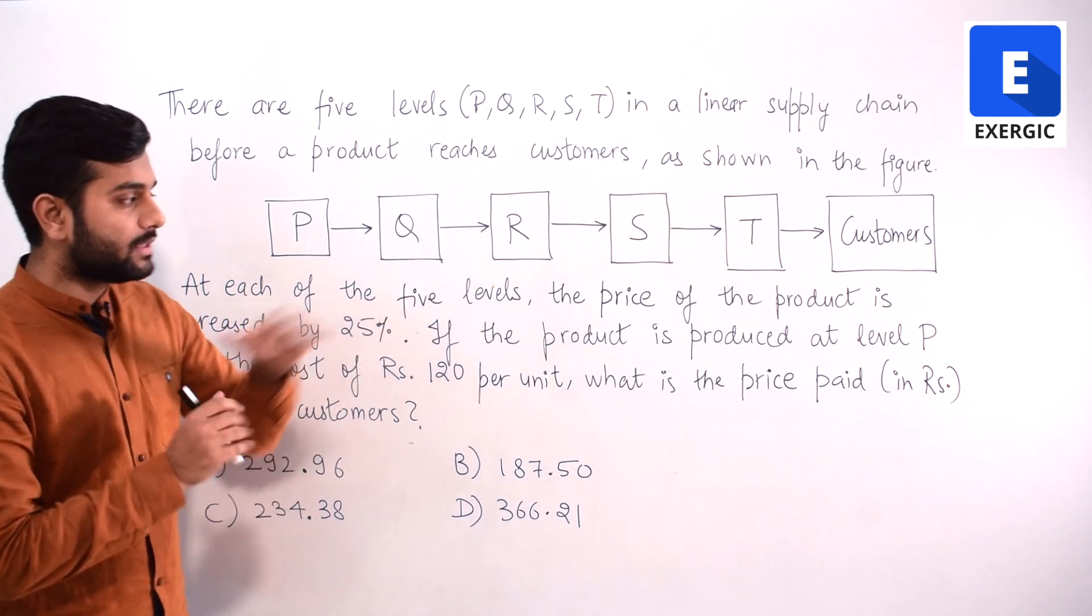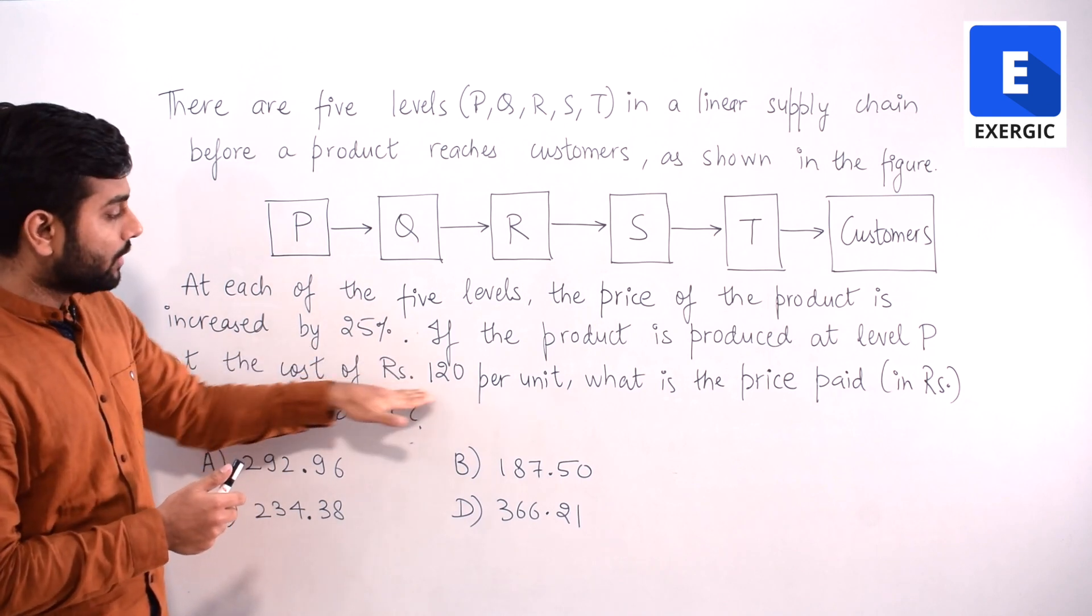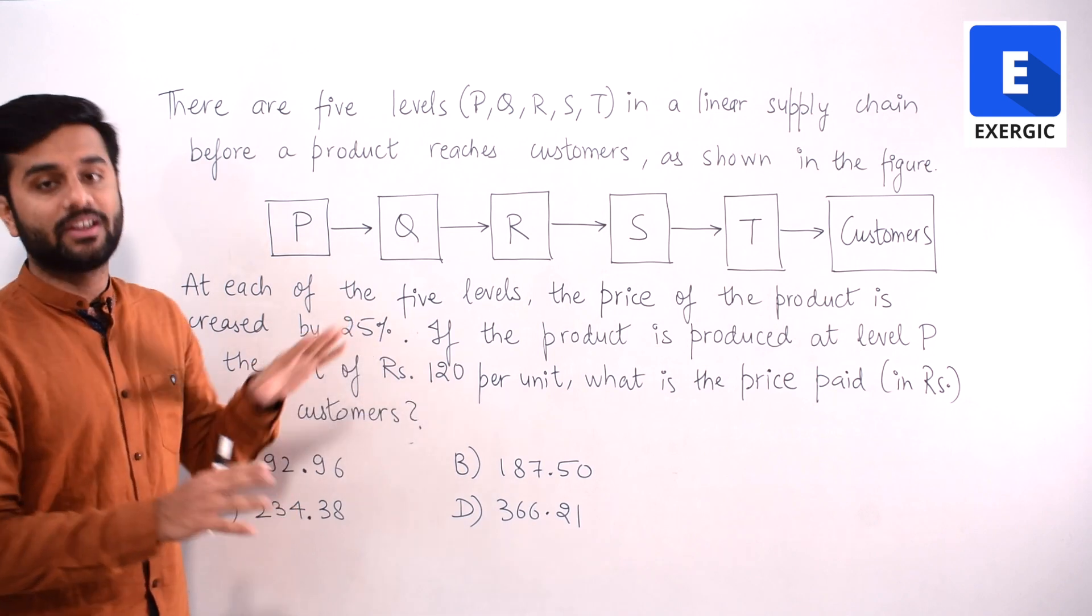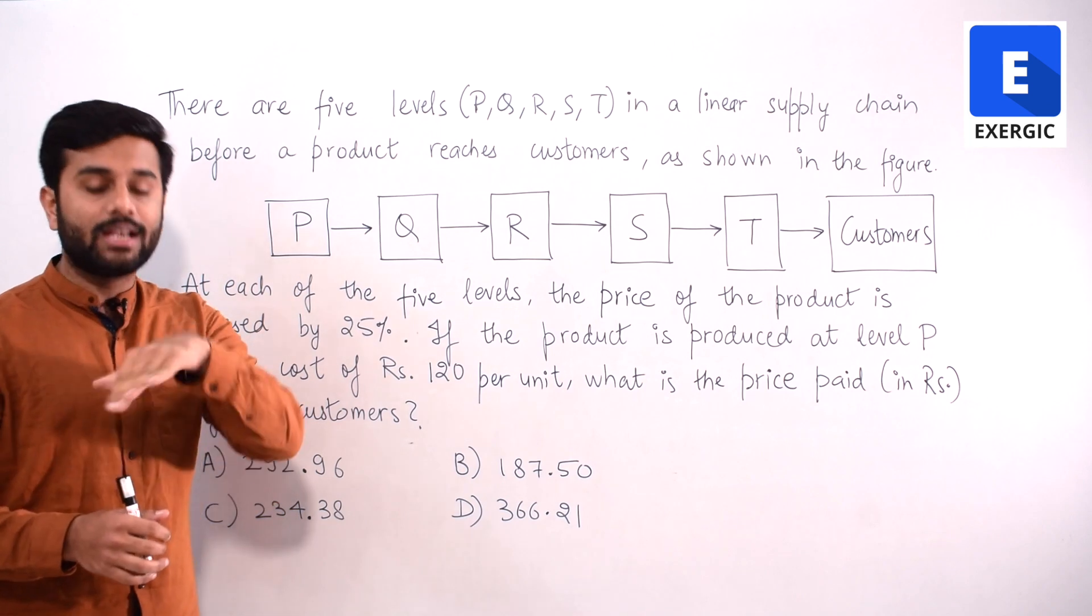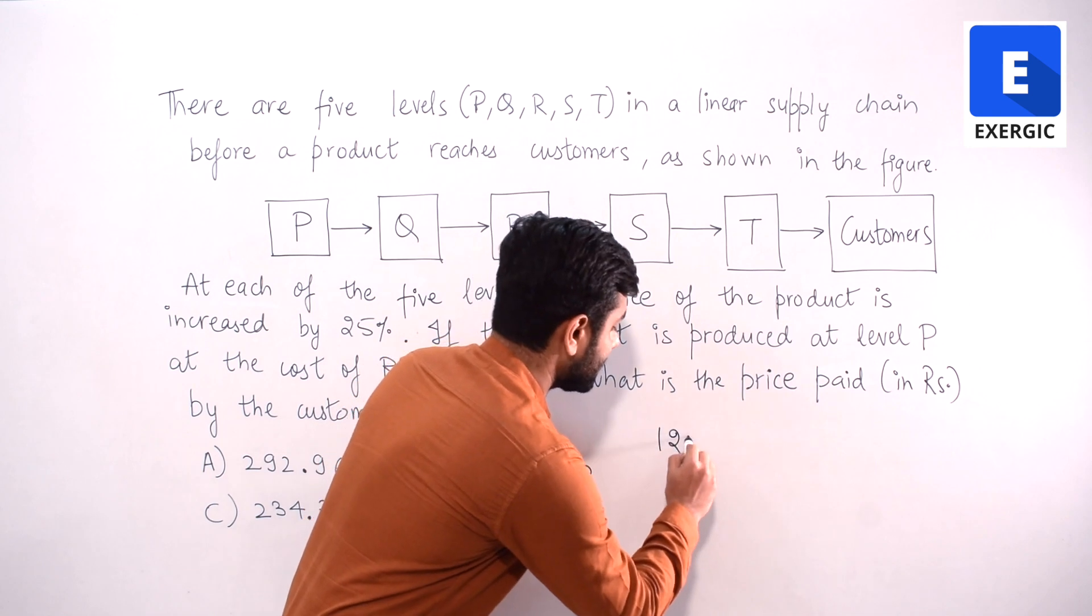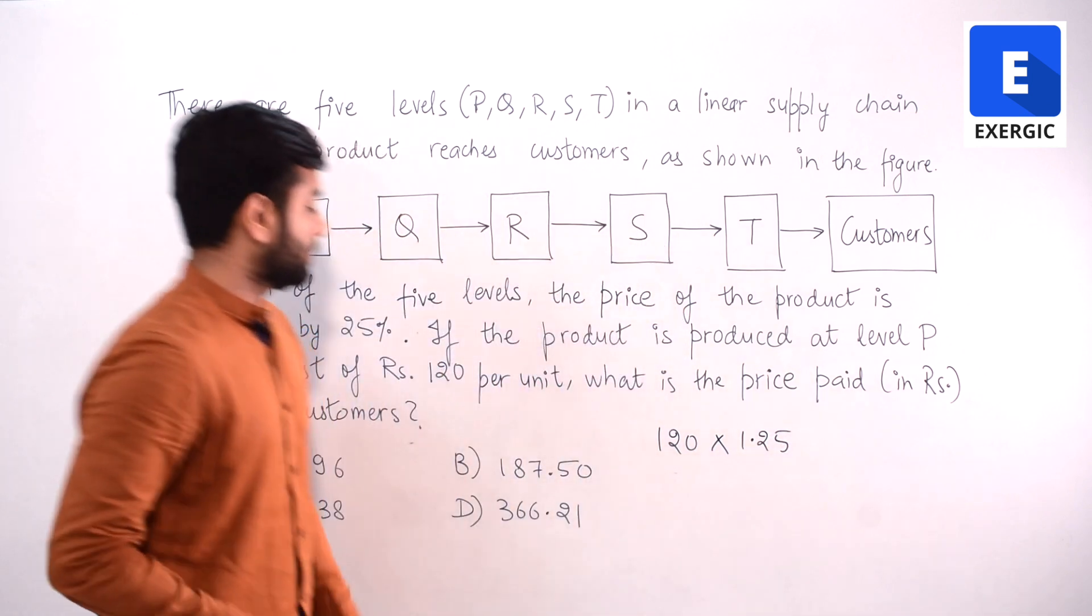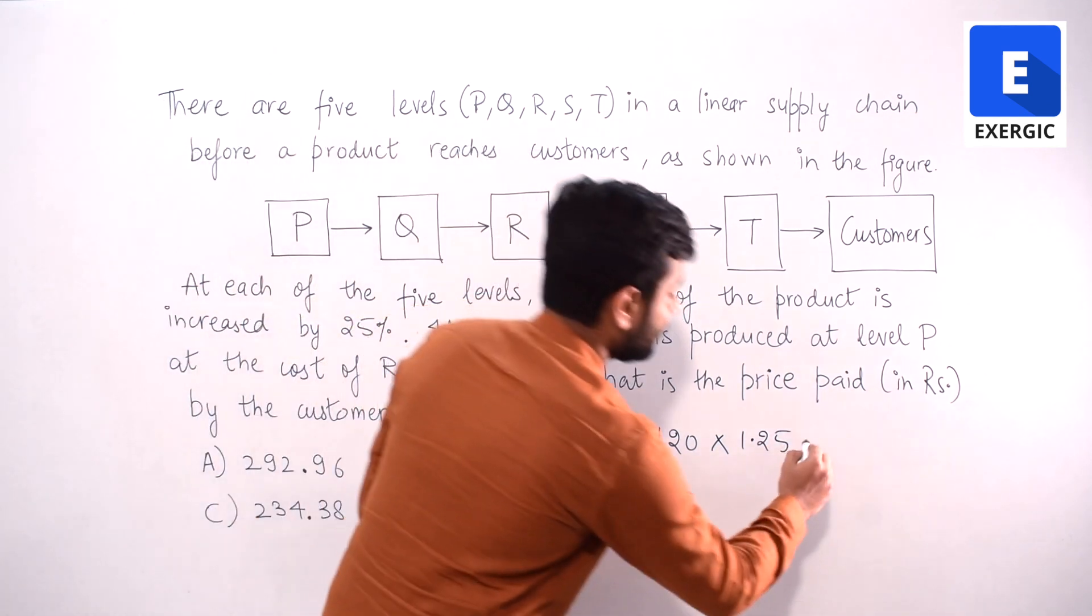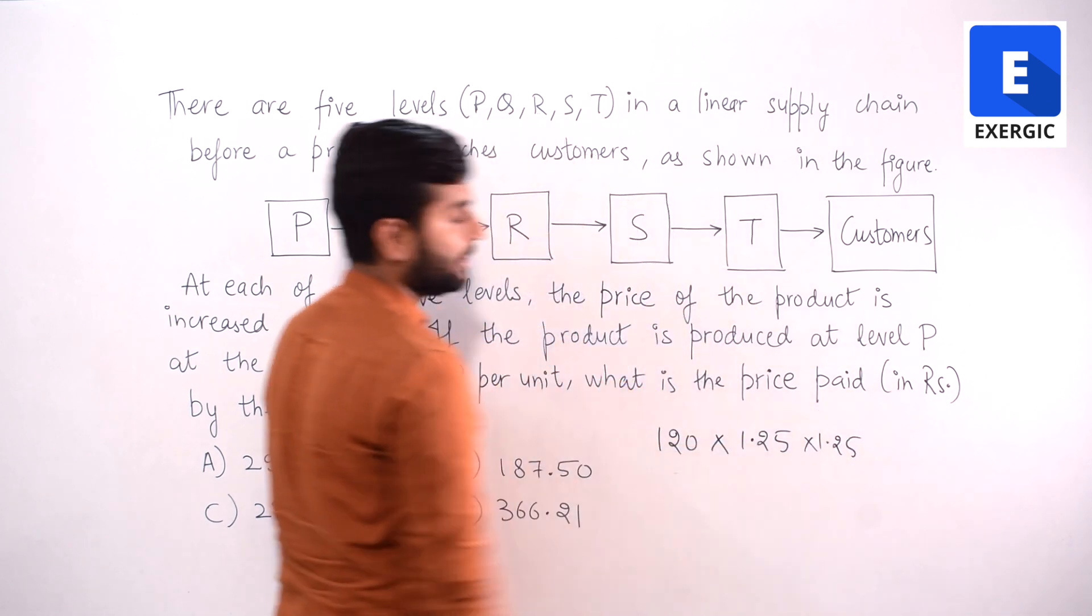This product reaching the customer initially has a cost of Rs. 120. Only two numbers are given to us: 120 and 25%. 120 is the initial cost and at each level 25% price is increased. So if there was only one level, the price the customer had to pay will be 120 multiplied by 1.25. If there are 2 levels it will be 1.25 square.